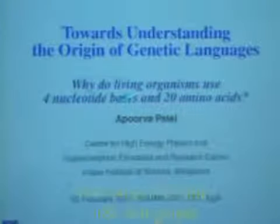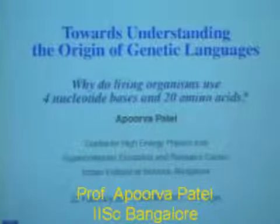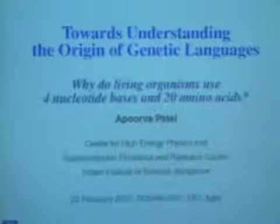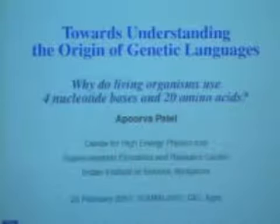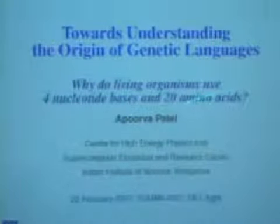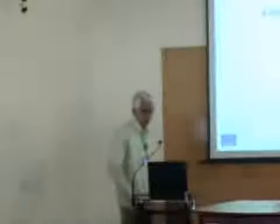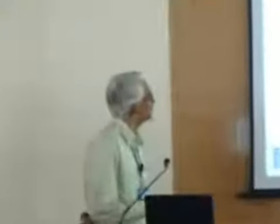Why do living organisms use four nucleotide bases and twenty amino acids? These nucleotide bases and amino acids form the alphabet of the genetic languages. There are actually two languages: one is that of DNA, made up of four letters, and another is the language of proteins, made up of twenty amino acids. There is a translation machinery between the two as well. I have been working on trying to understand these questions with a bit of mathematics and a lot of common sense, and that is what I am trying to present to you today.